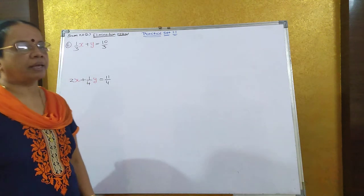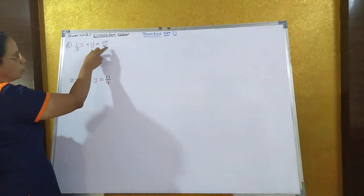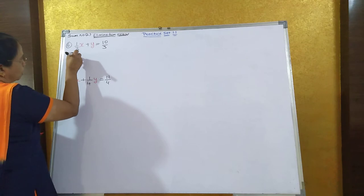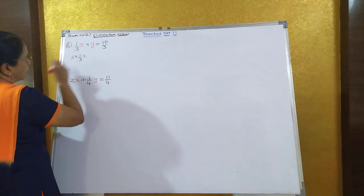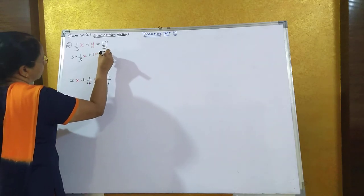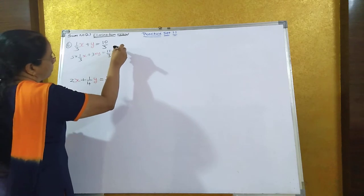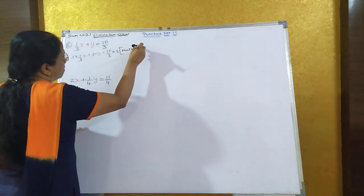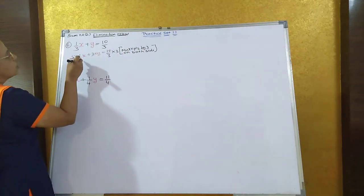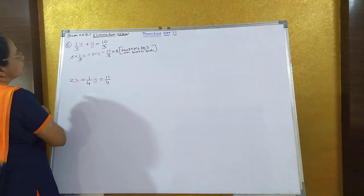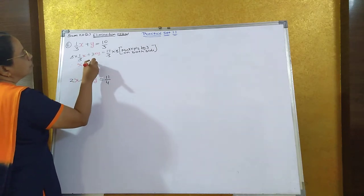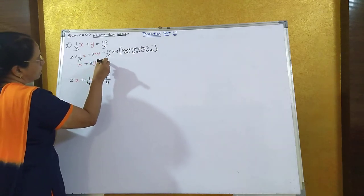This is the sixth sum, second part. We have 1 upon 3x plus y is equal to 10 upon 3. The denominator is 3, so we multiply throughout by 3. We get 3 into 1 upon 3x plus 3 into y is equal to 10 upon 3 into 3. The 3s cancel on both sides, giving us x plus 3y is equal to 10. Let us take this as equation 1.